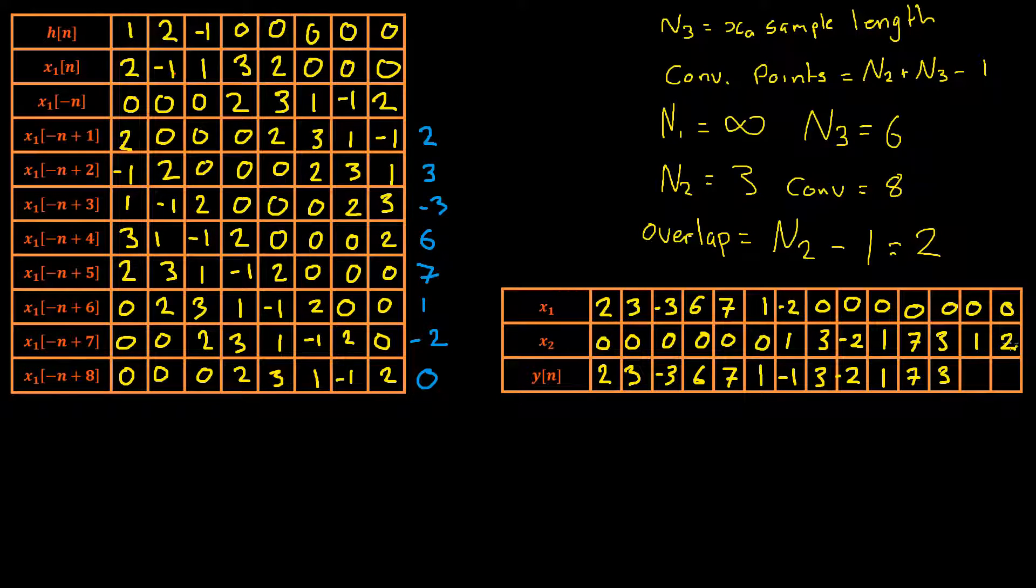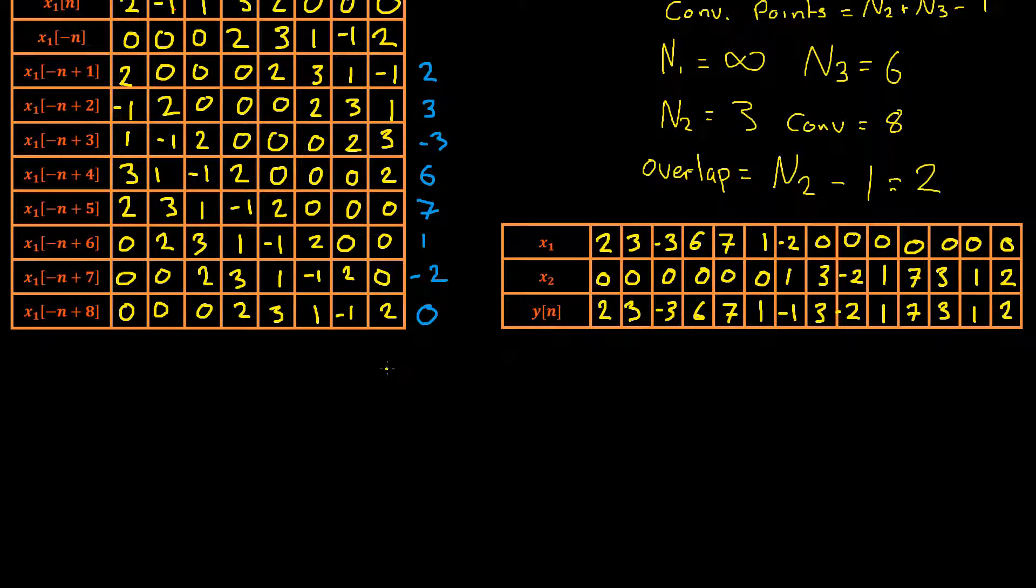Now when we get to the last two terms here we need to be careful because the x3 or the contribution from the x3 samples will overlap with the last two samples of our x2. So for now we can write one, two, however if we were doing this for the entire input signal this would also be changed. So from that we have our final convolution from our input signal.